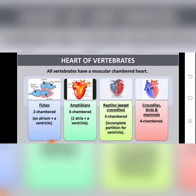Now we will understand by taking examples of different vertebrates — fishes, amphibians, reptiles, birds, and mammals. In fishes, the heart is two-chambered. In amphibians and reptiles, the heart is three-chambered. Whereas in birds and mammals, the heart is four-chambered. We will see how the heart pumps in each case.